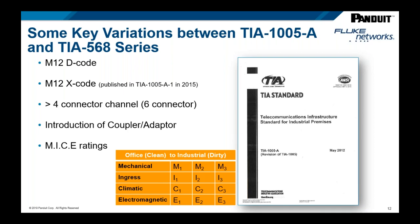What sets TIA-1005A apart from the commercial standard is recognizing the dynamics of the plant floor environment and the adoption of the MICE criteria. MICE is an acronym covering Mechanical, Ingress, Climate/Chemical, and Electromagnetic — things commonly evaluated by design engineers on the plant floor. The standard accommodates different deployment scenarios such as control panels and adjusts for those MICE criteria, recognizing the difference from the more static commercial environment.